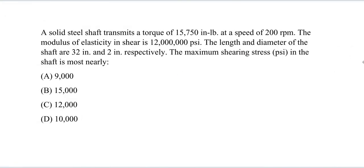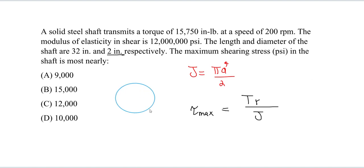Let's write that down. Our J value is pi A to the 4 divided by 2. We're going to use that maximum shear stress equation: torque times R divided by J. If I draw this, we have a shaft cross section. The shaft has a diameter of 2 inches, so our D value is 2 inches.